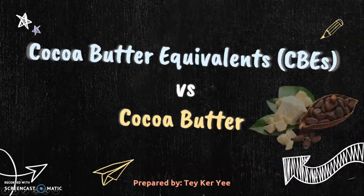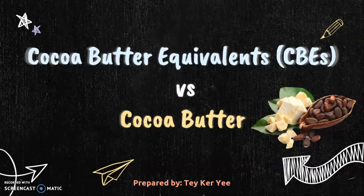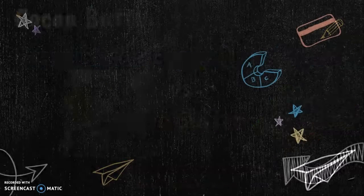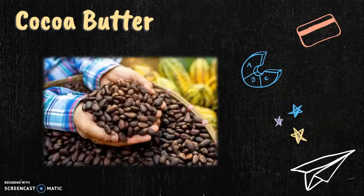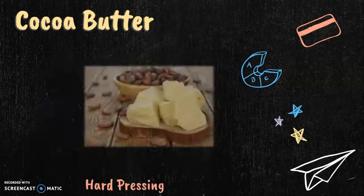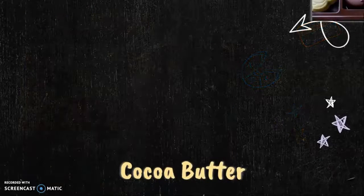Hi everyone. The topic of this video is to discuss the cocoa butter with its alternative, the cocoa butter equivalents. Cocoa plant grows the cocoa beans, which can be used to extract the cocoa butter through hard pressing. Cocoa butter is a traditional and unique vegetable fat to make the chocolate.